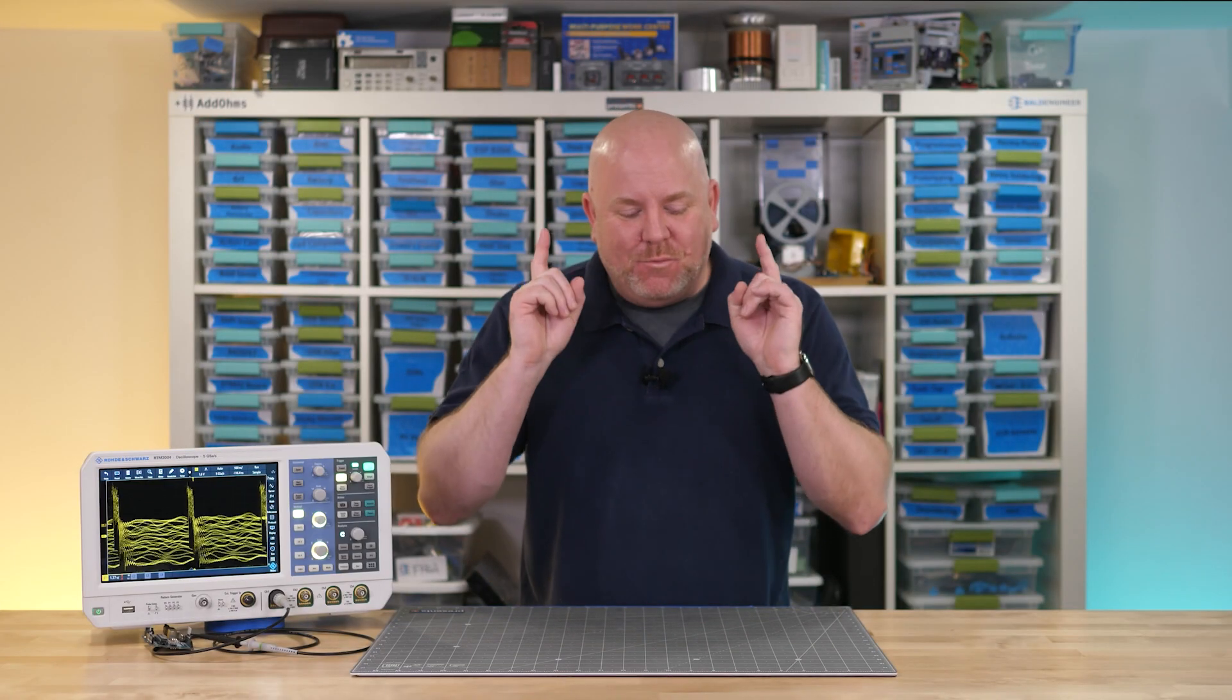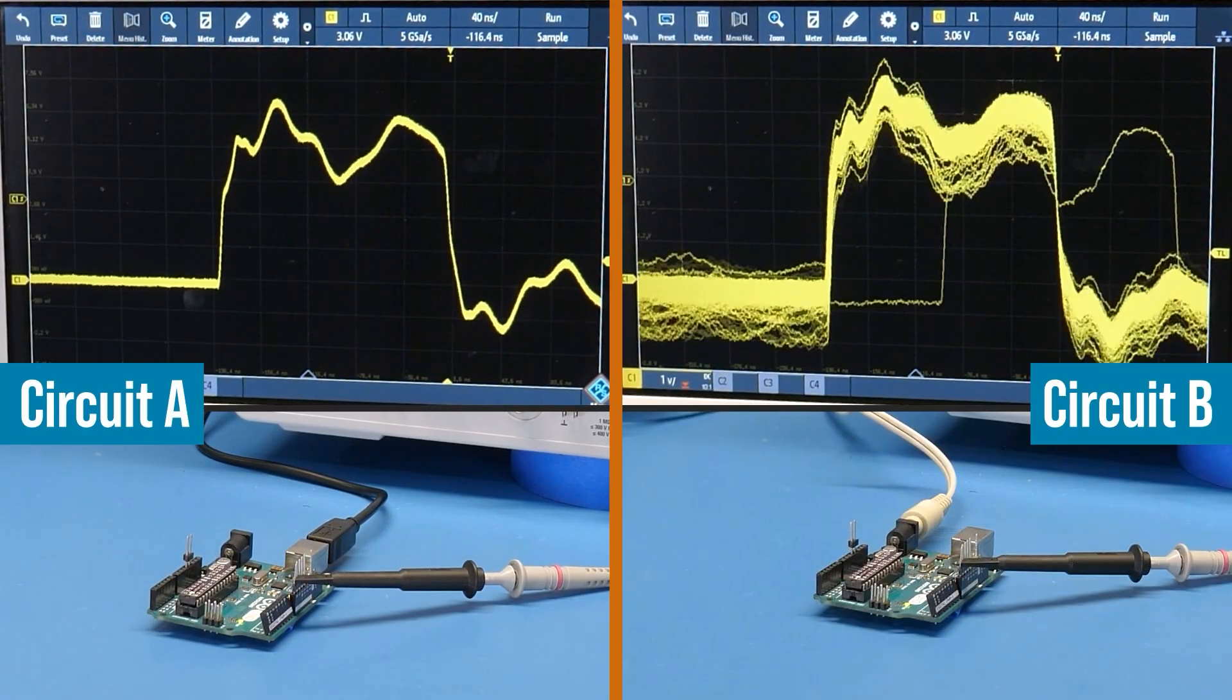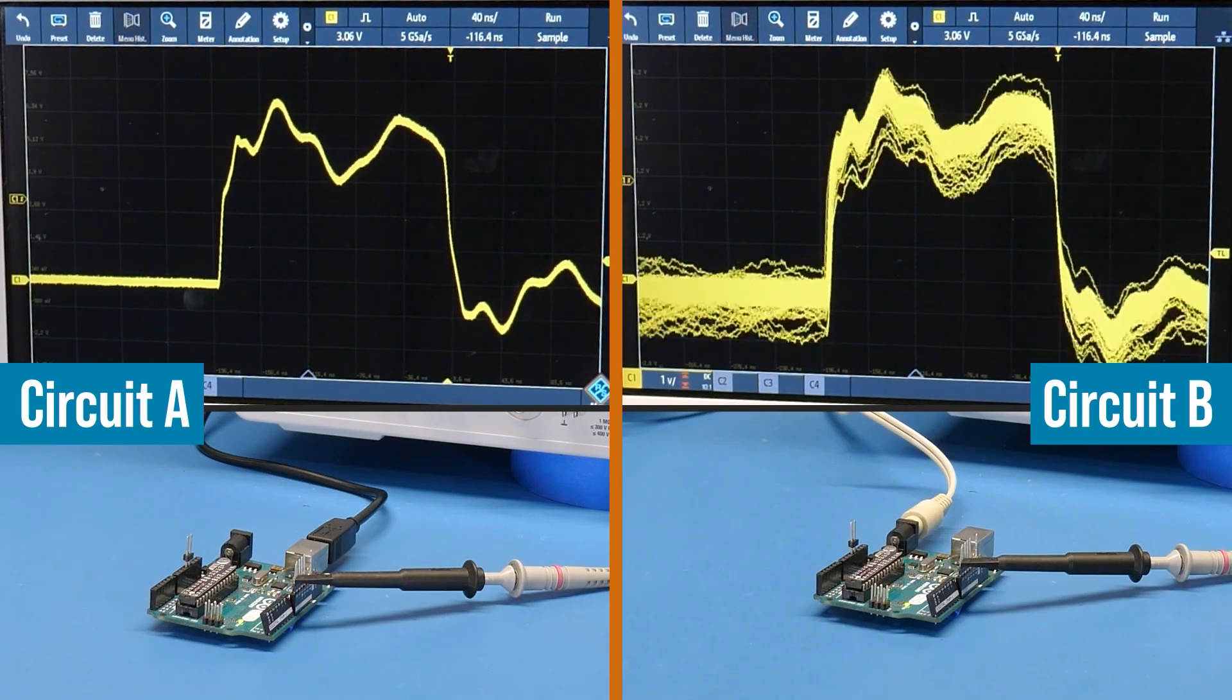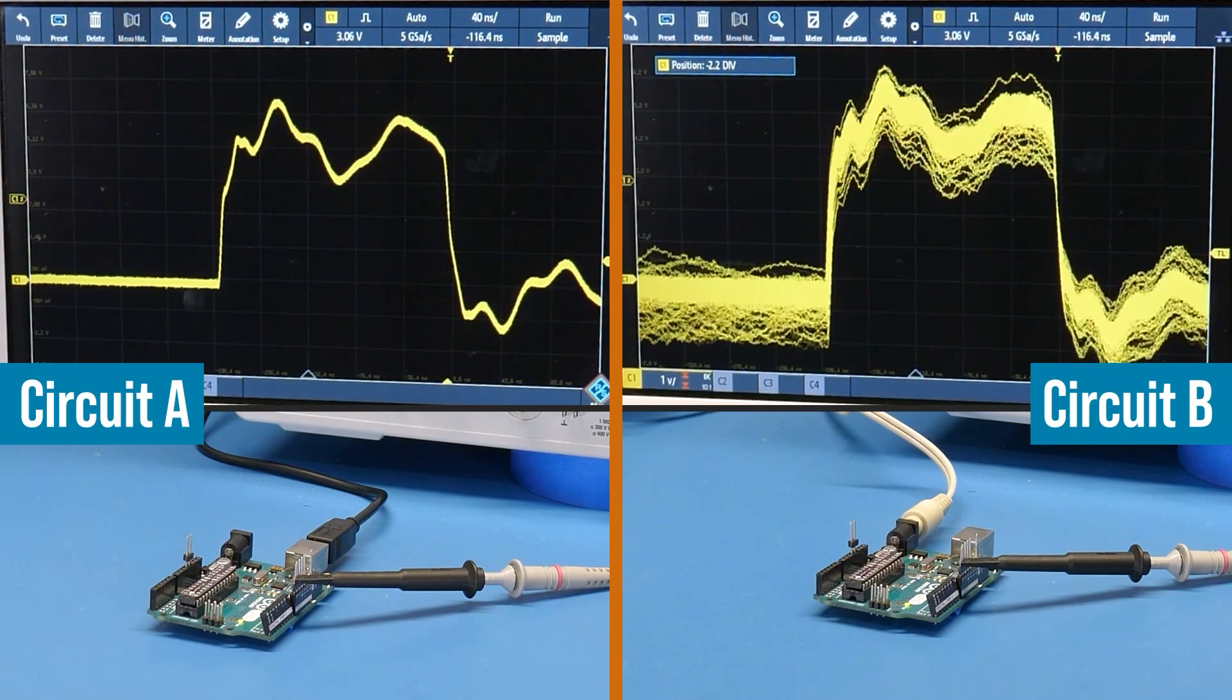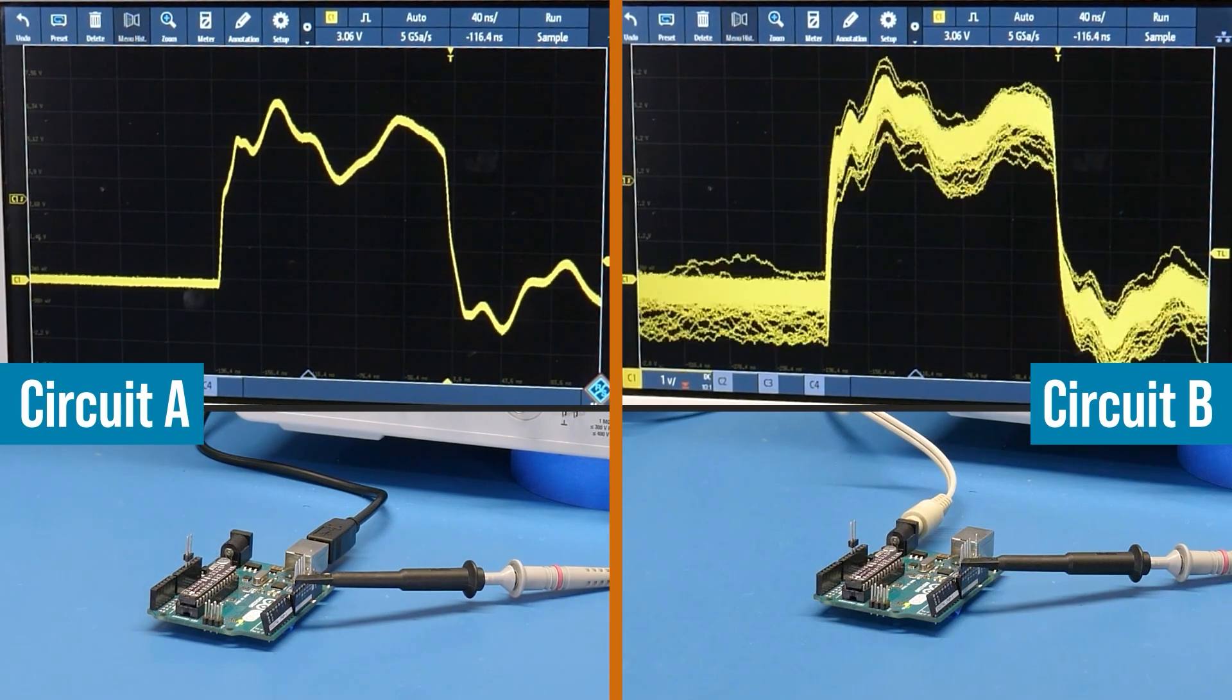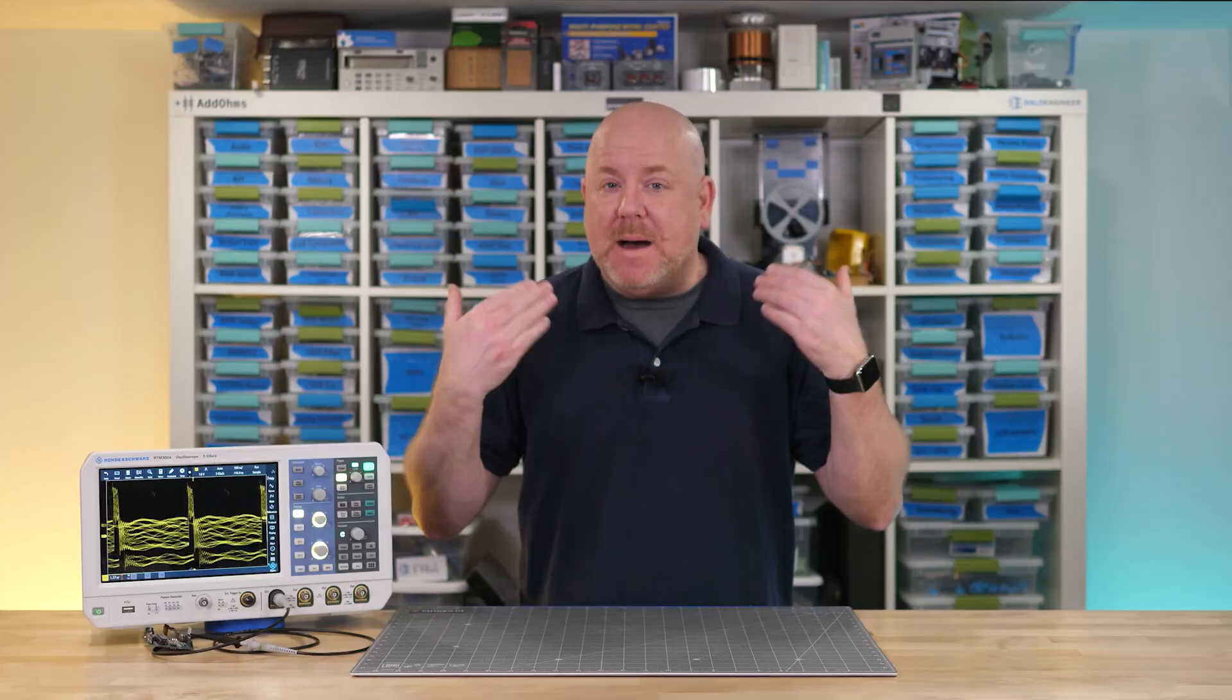Before closing we have one more thing to cover. Check out this comparison. This is the same Arduino board with something slightly different about its setup. Each has a single probe connected with no ground. Yet one of the waveforms looks pretty decent and the other does not. So there is something fundamentally different about the two.